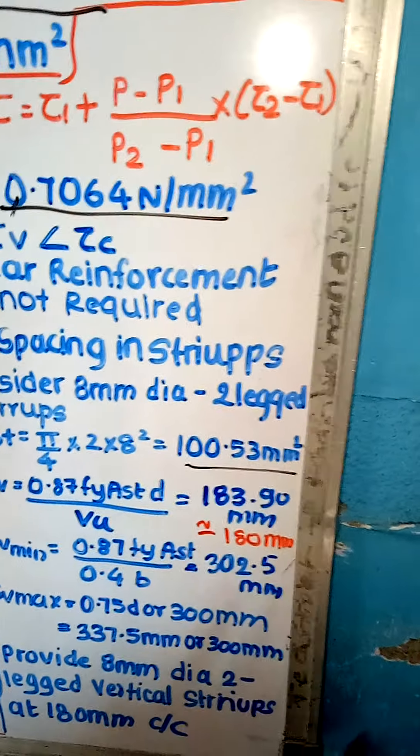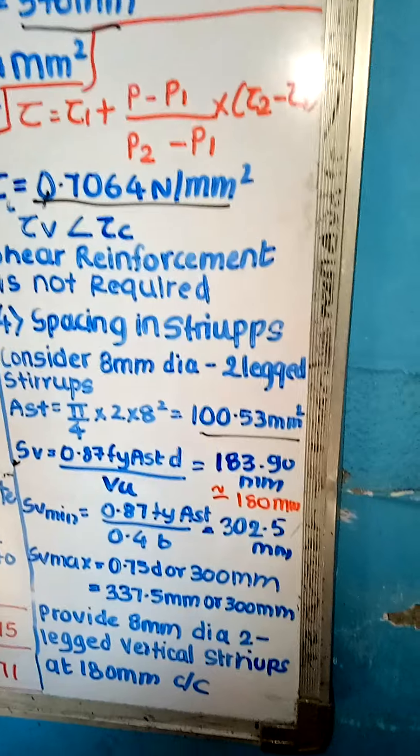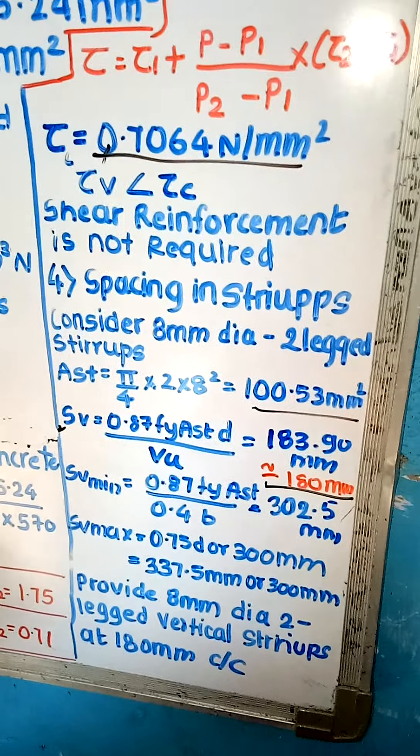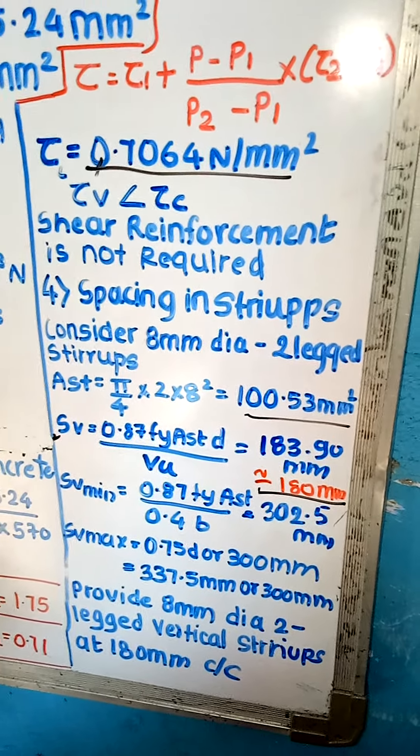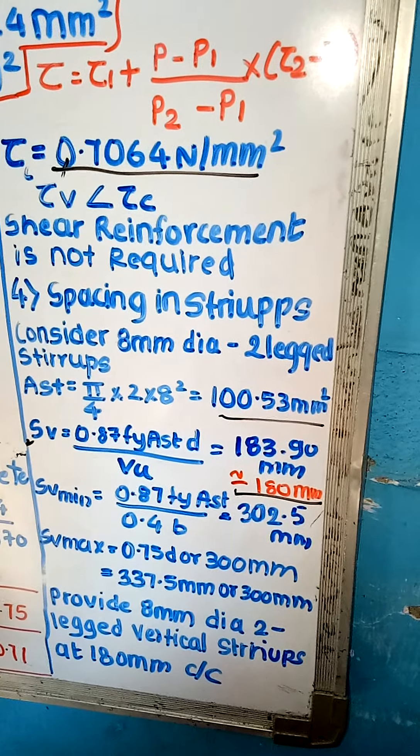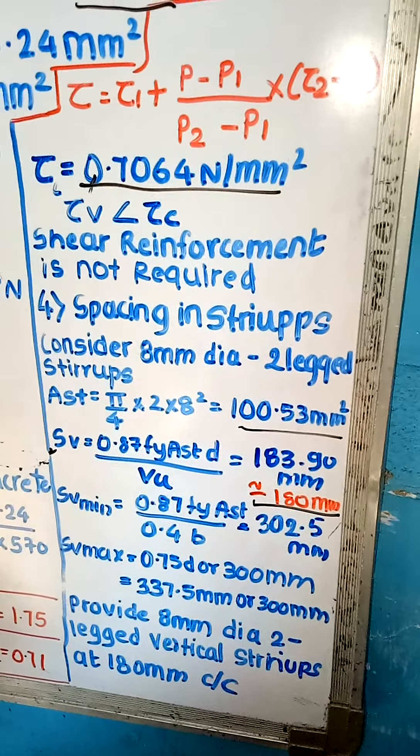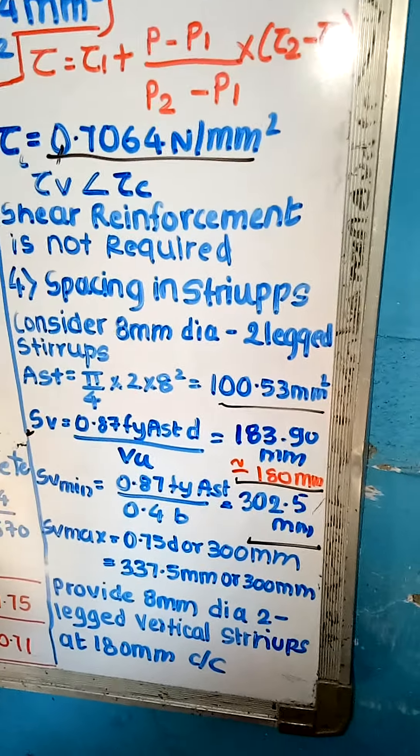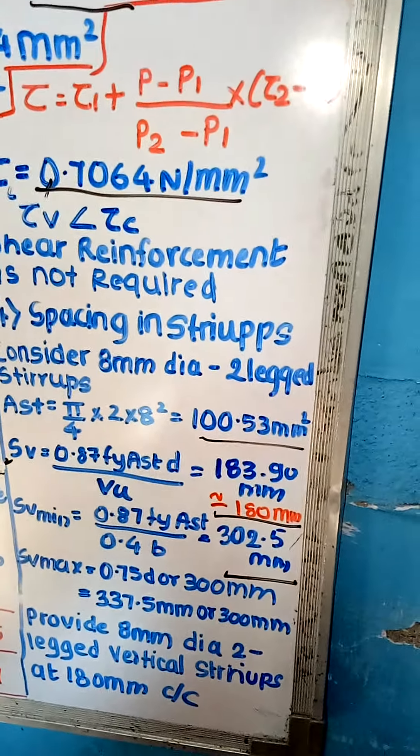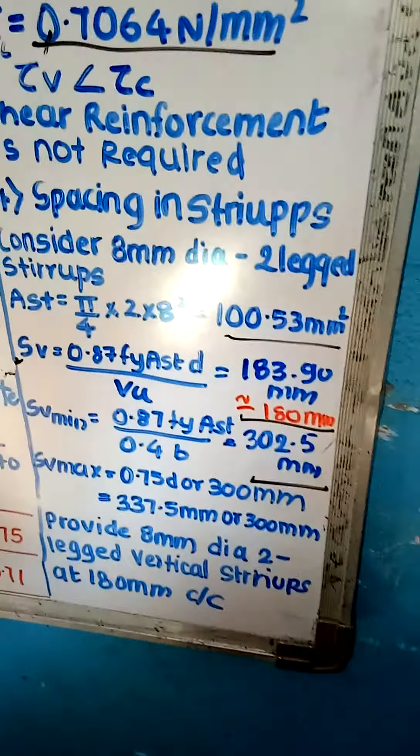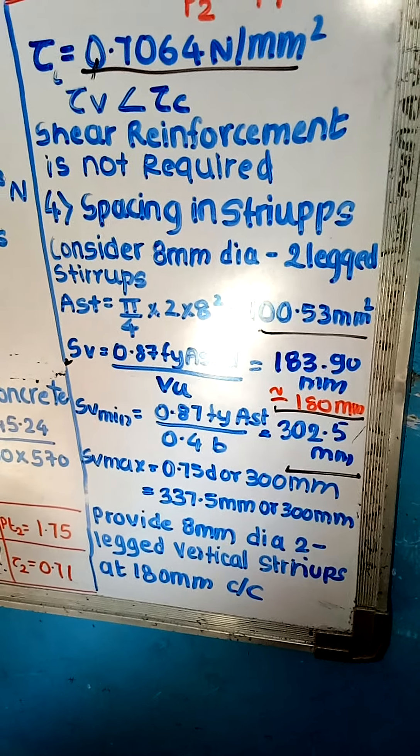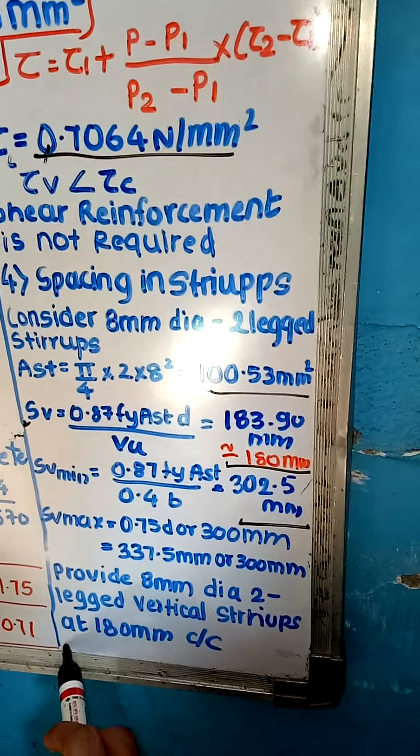Now SV minimum, the minimum we can give is 0.87 FY AST upon 0.4 b. That is 0.87 into FY 415 into AST 100.53 divide 0.4 b is 300. So it is 302.5 mm. SV max is 0.75 d or 300 mm. 0.75 into 570 is 427.5 mm or 300.